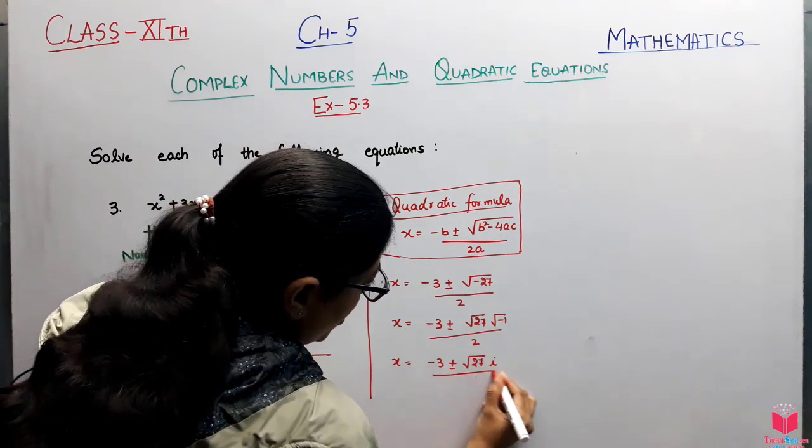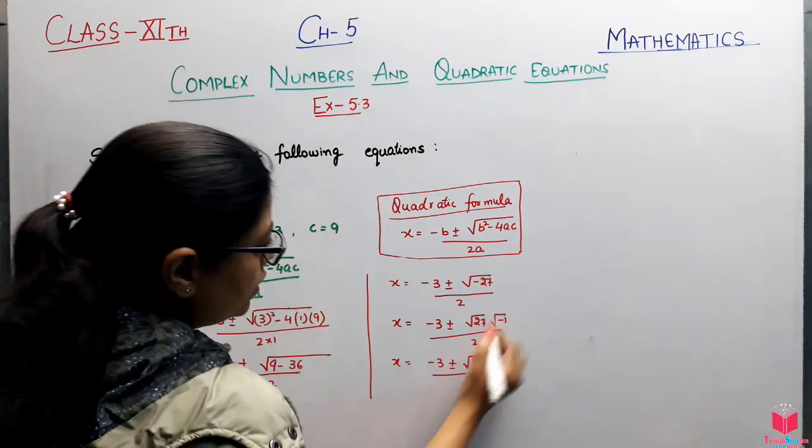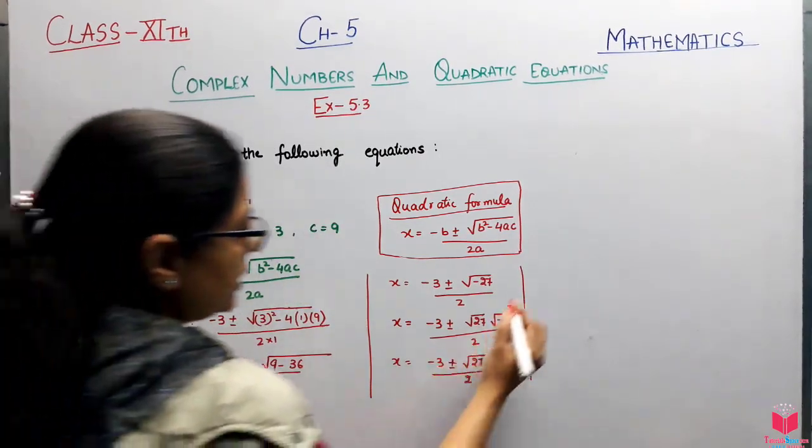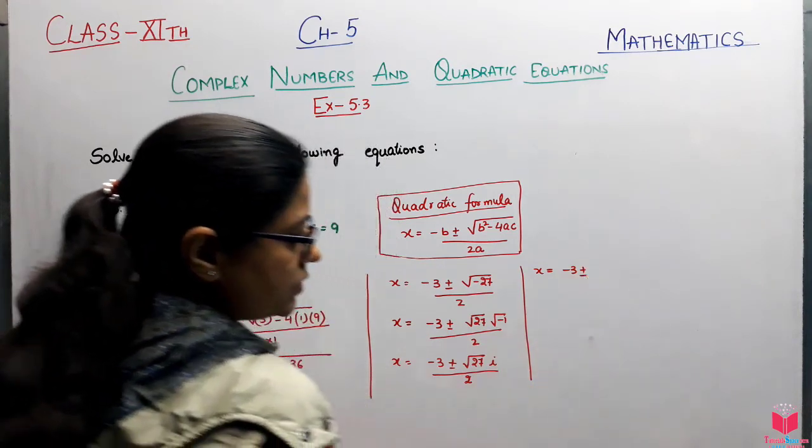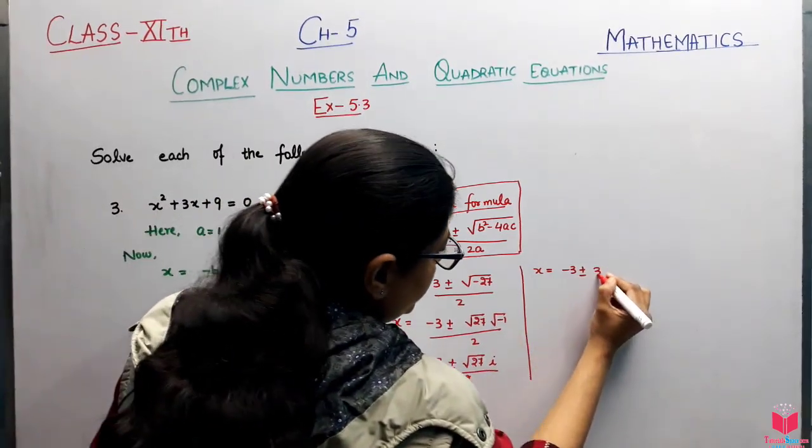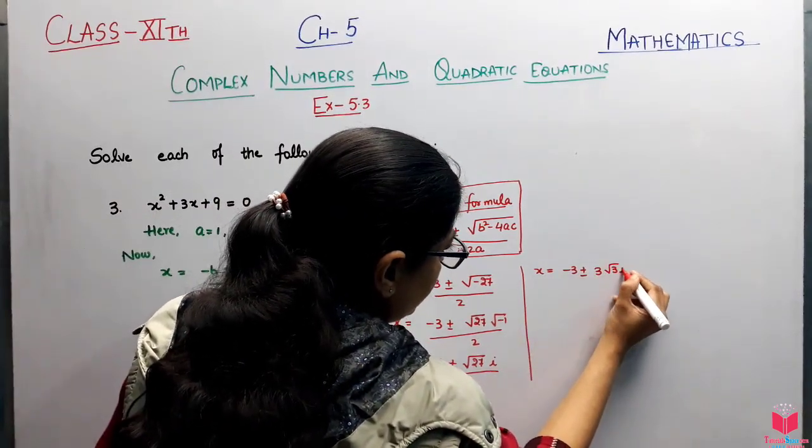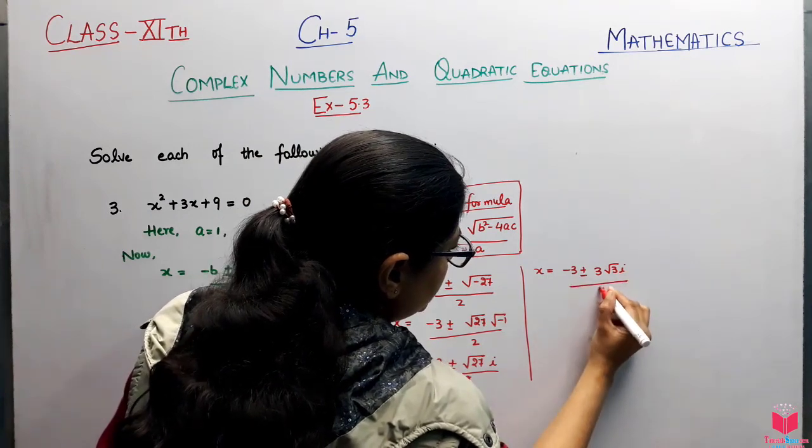After we solve and simplify, when you solve this, you will get x is equal to minus 3 plus minus 3 root 3 iota whole upon 2.